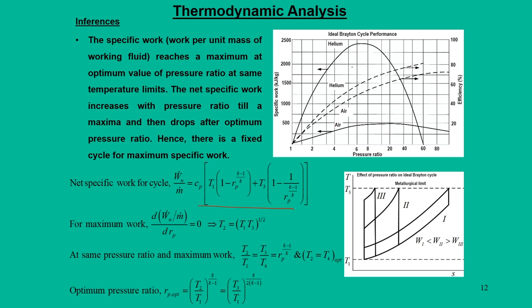For specific work, we find that it initially keeps increasing and at one particular point it starts dropping. If you keep increasing the pressure ratio, after some point the work output comes down. This is true for both helium and air. Compared to helium and air, helium has a high value of C_p and k — since C_p for helium is almost 5 times more, the peak power for helium is almost more than 5 times. The way it rises, it also falls suddenly.